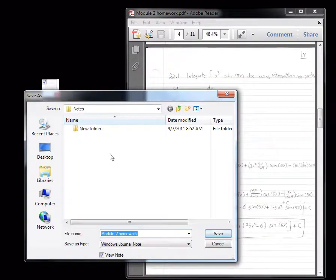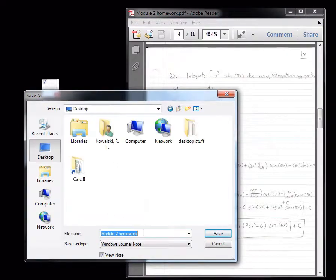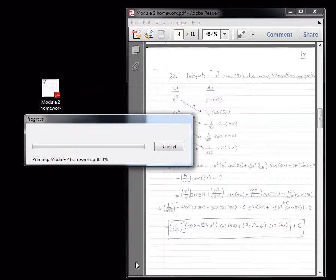So a pop-up menu will ask you to name this new journal file, so I'm going to stick it on the desktop, and I'm going to call it Topic 22 Homework, since these would be the problems from Topic 22. So we'll save this.